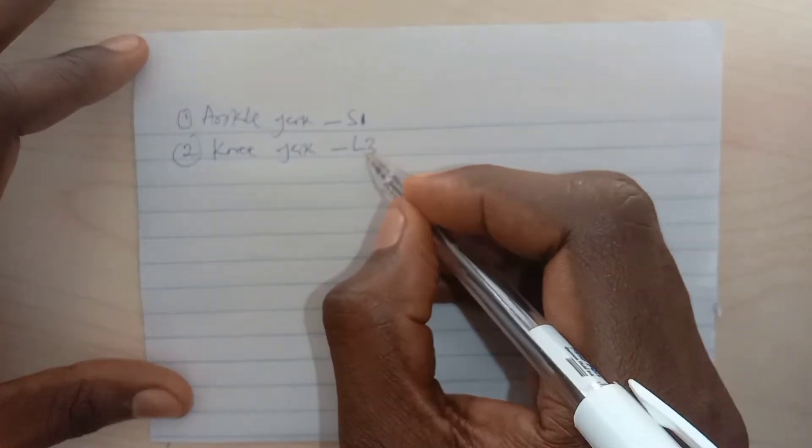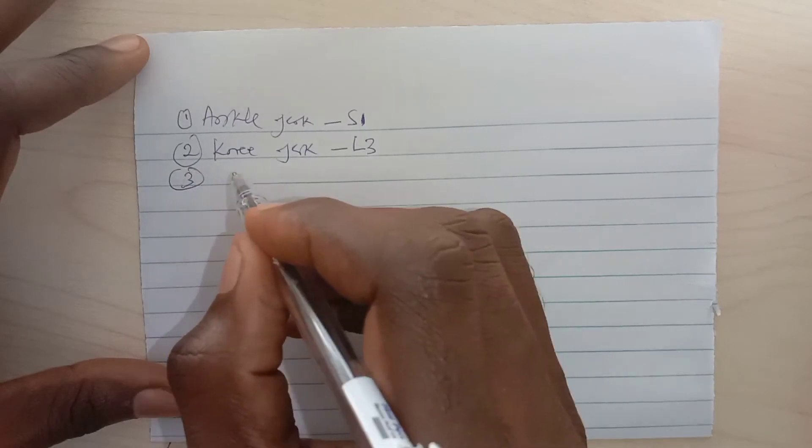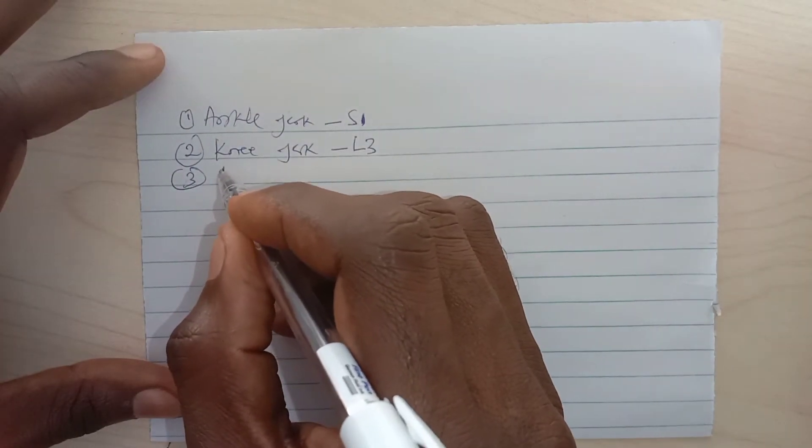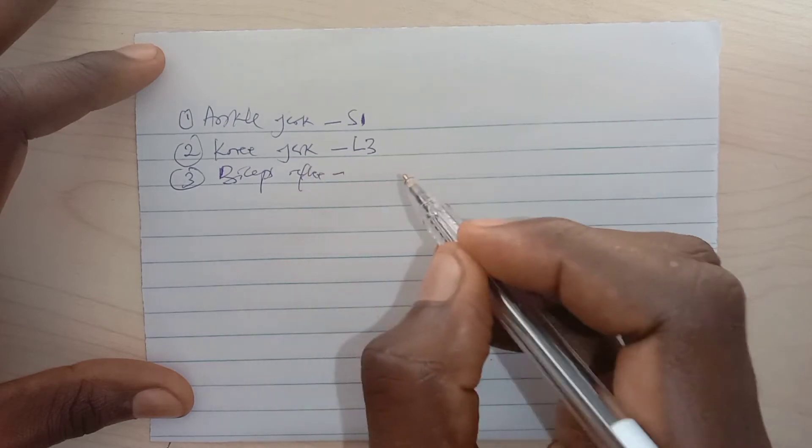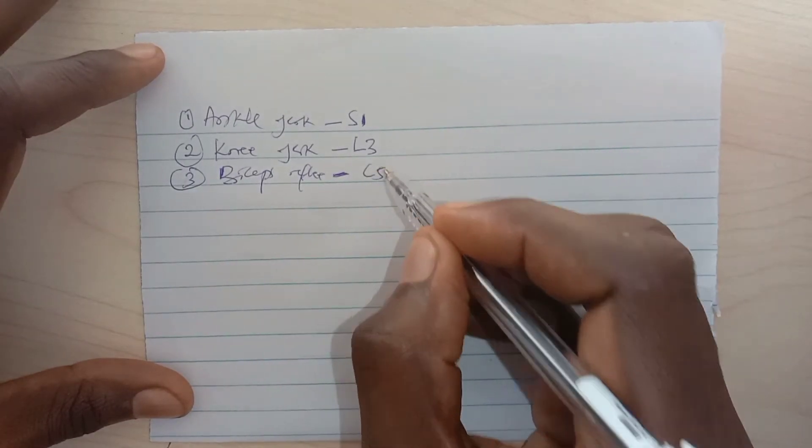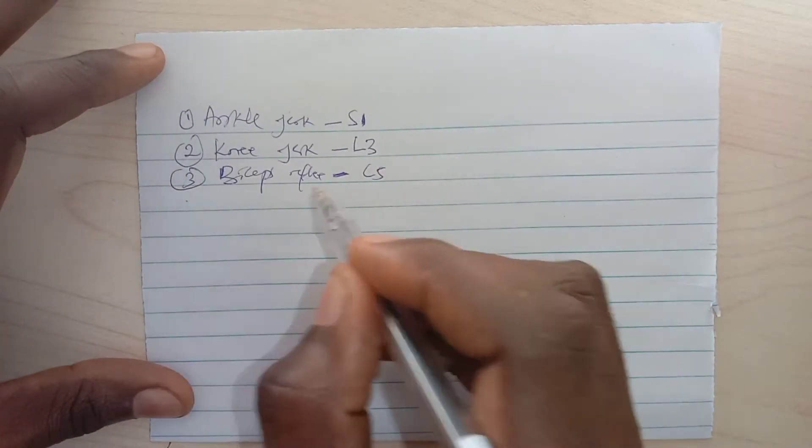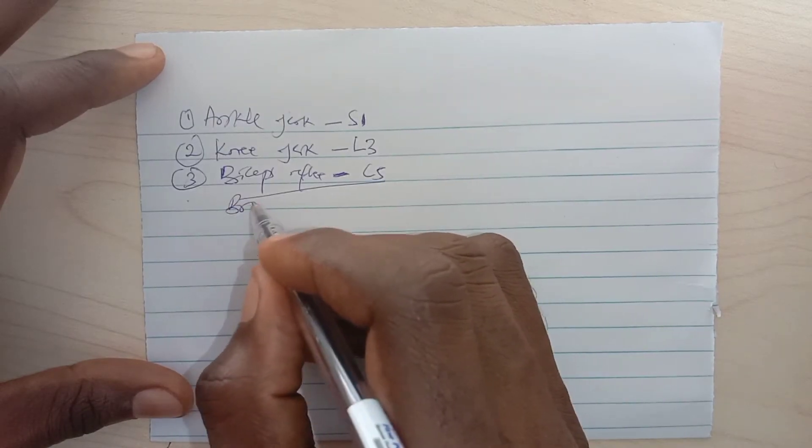which is mainly L3. I'm going to talk about the biceps reflex which is mainly C5, and the brachioradialis